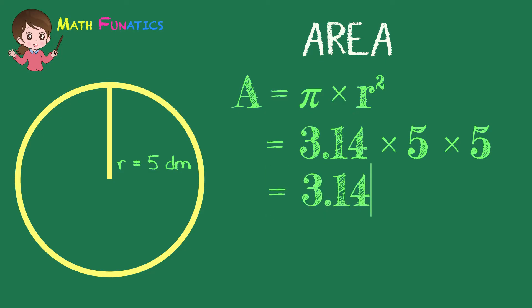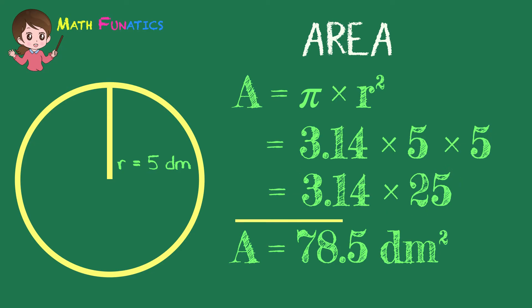Bring down 3.14, then get the product of 5 times 5, which is 25. Multiply 3.14 by 25 and get 78.5. So, the area of a circle with a radius of 5 decimeters is 78.5 square decimeters.